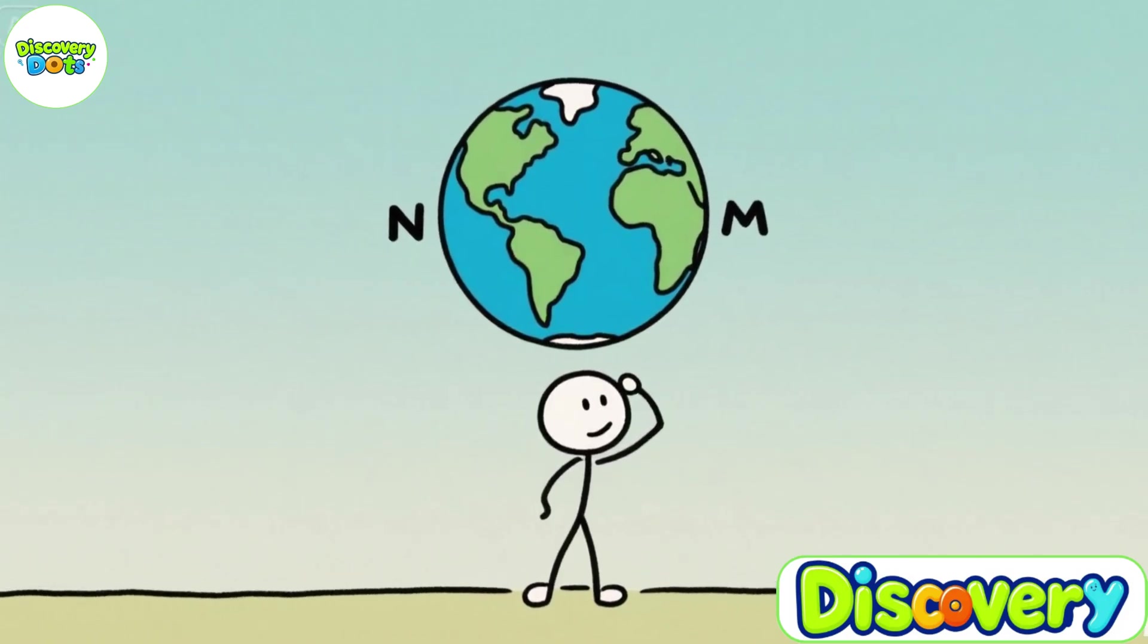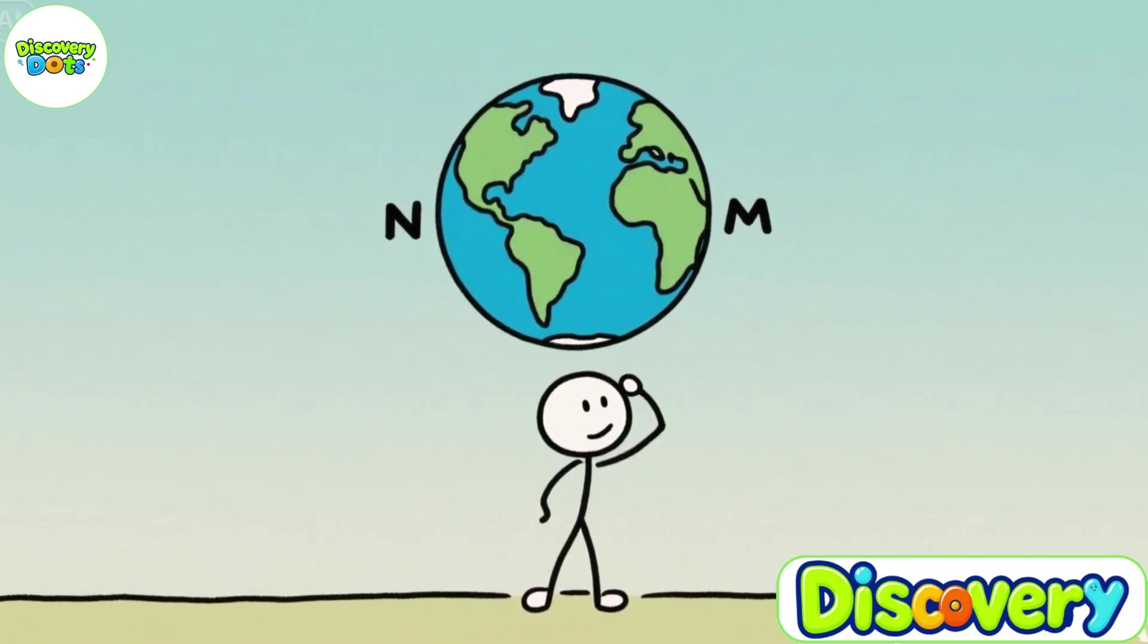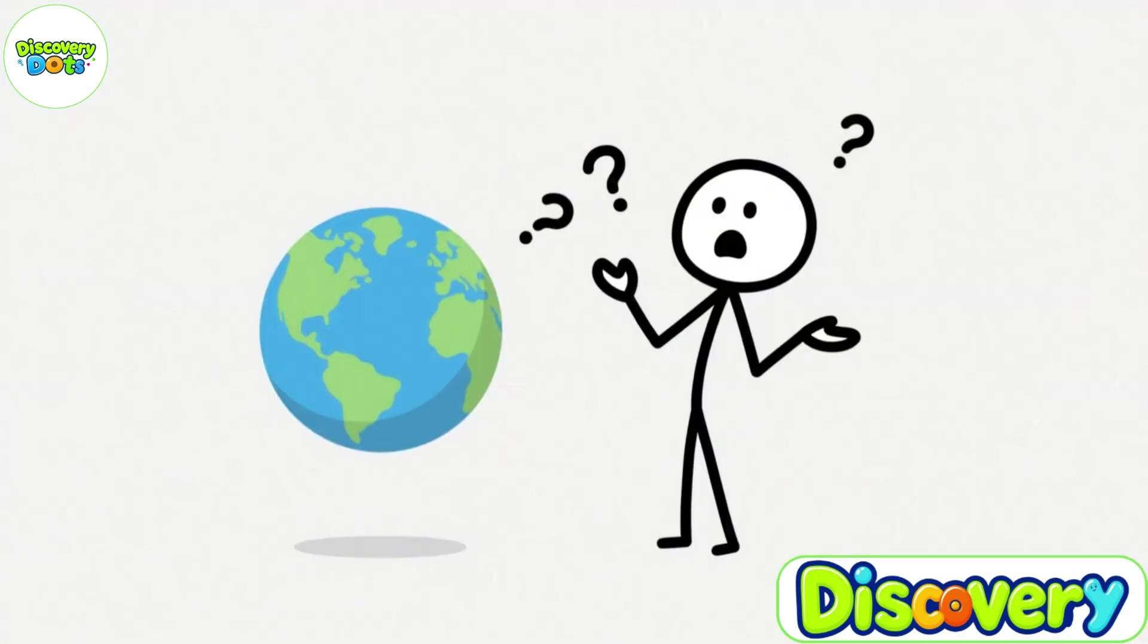At this point, you might think Earth's magnetic poles, the north and south poles, are fixed and unchanging. But the truth is not that simple.